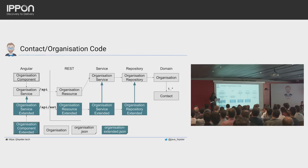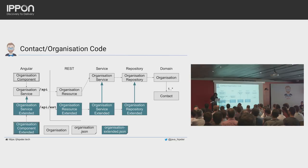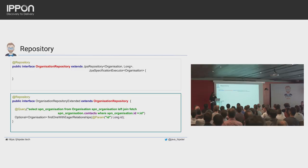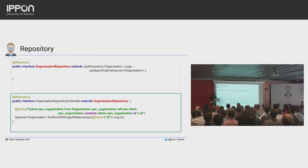On the front end, we don't touch the Angular components generated by JHipster — we create our own. For that we need a service that extends from JHipster's generated code. Unfortunately we also need a new route path: I'm showing it as slash API slash ext so you understand it's two different endpoints. If we need to change internationalization messages, we create a new JSON file and use a little trick to override the existing one. So the green boxes represent our code. The OrganizationRepository is the code generated by JHipster, and since we need a new query we create a repository that extends from it and adds a new method.